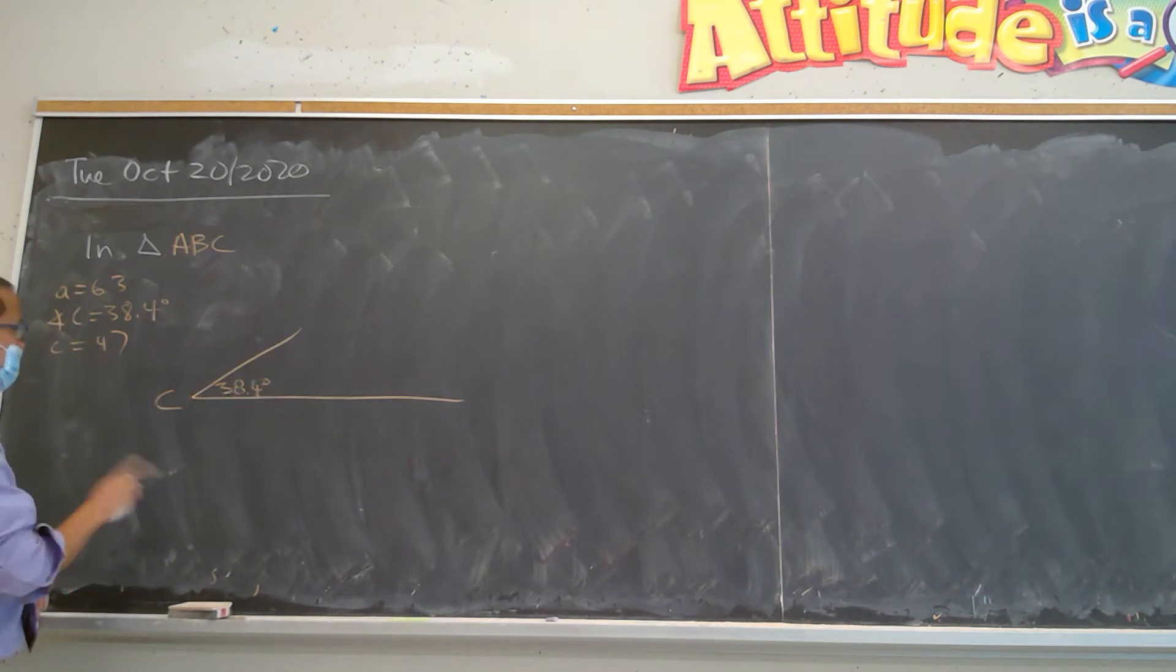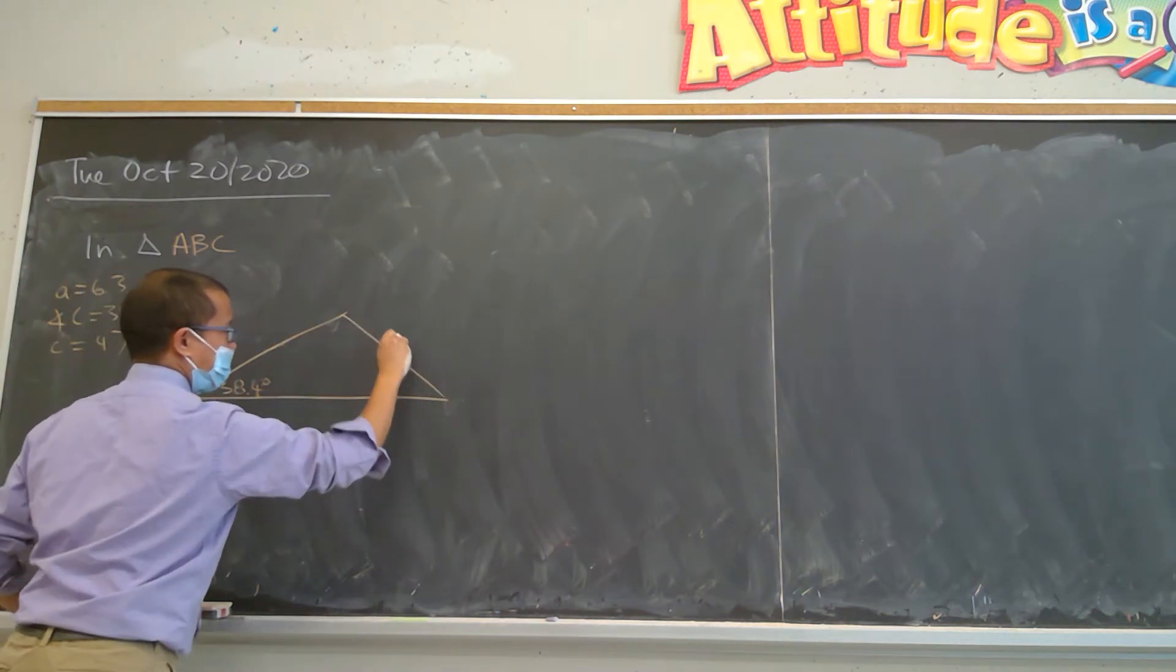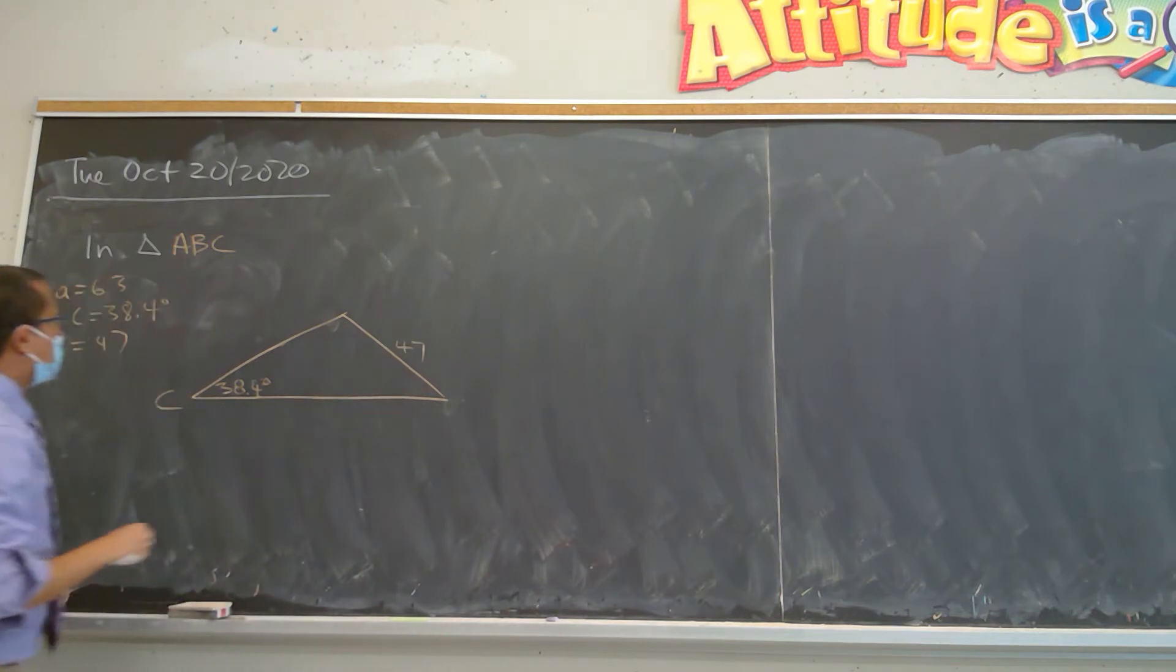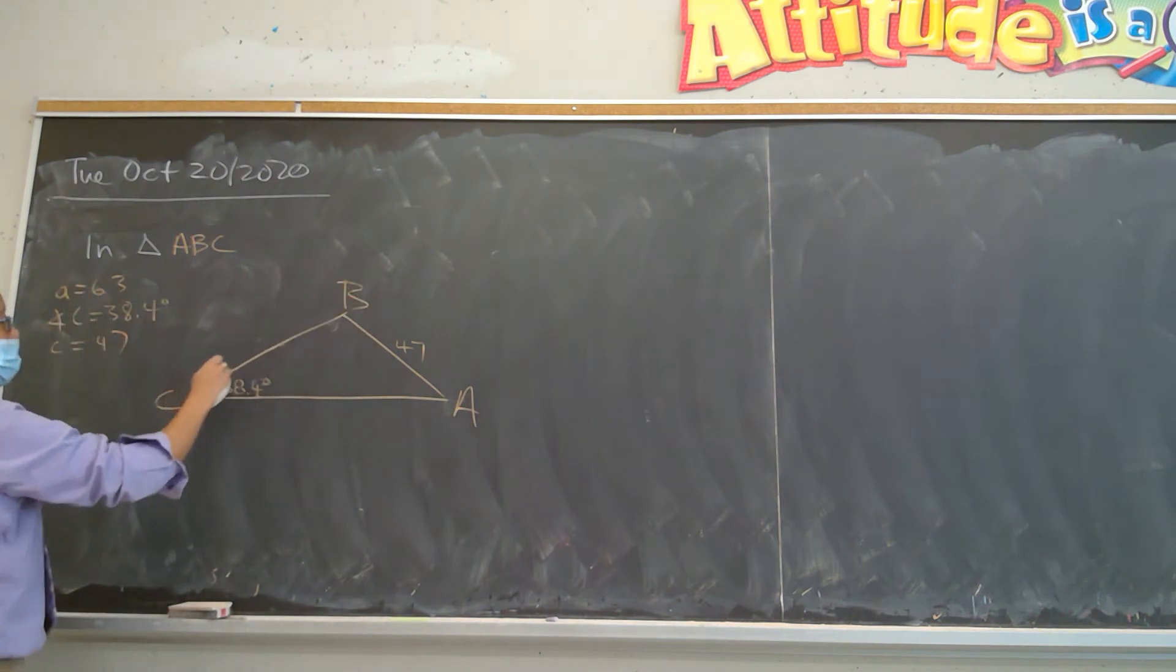And then side C is probably going to be over here. So that's my 47. That means this is angle B, angle B, and so that's 62.